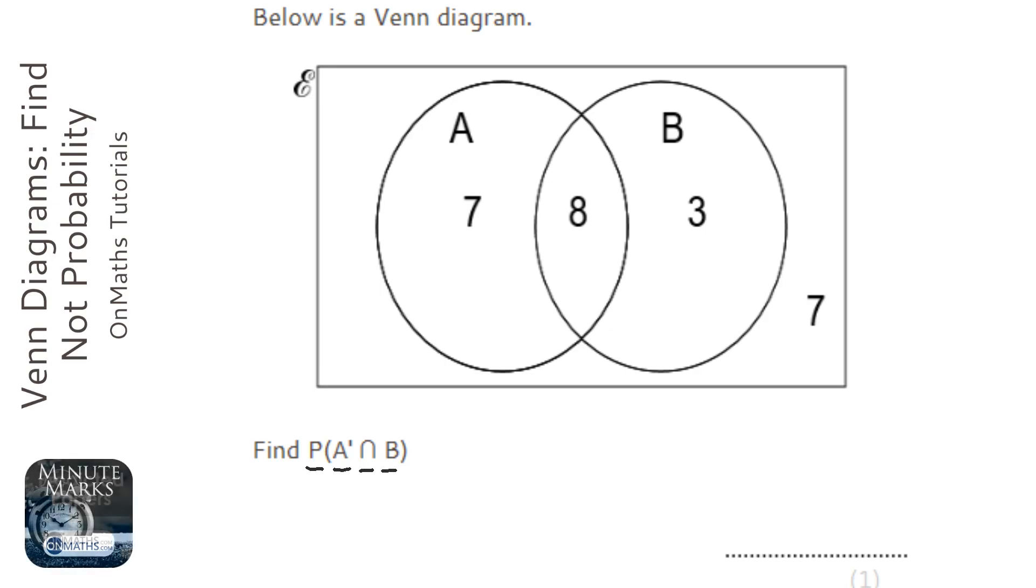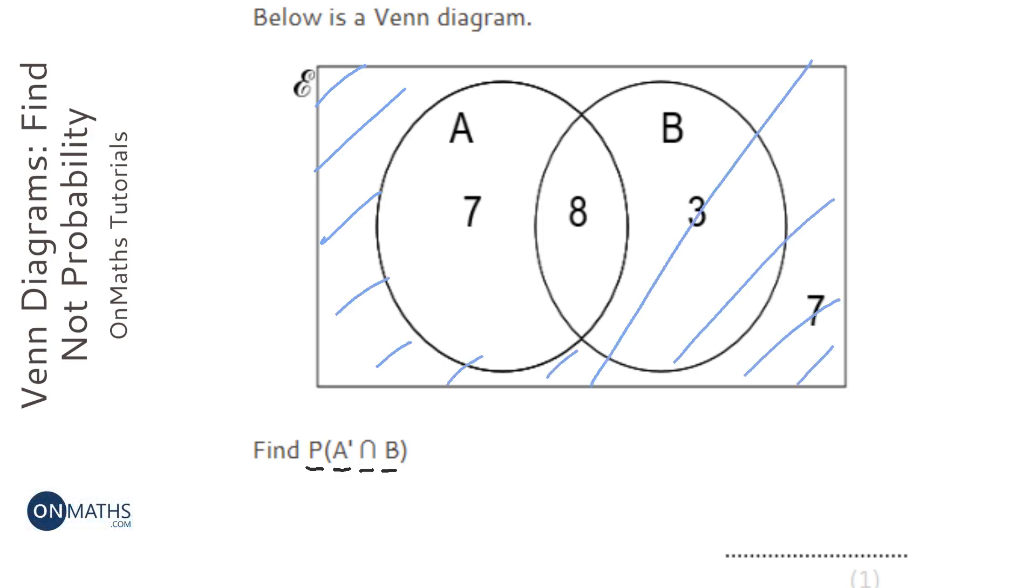Now, there are loads of different ways of thinking about this. Not A is anywhere that's not in A. So it's anywhere on here that is not in A, and I'm going to shade that in with blue.